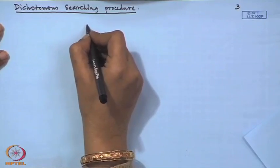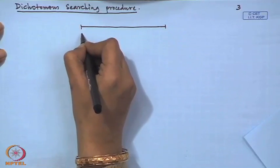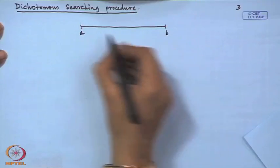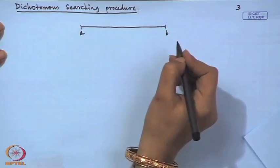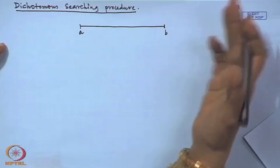In the dichotomous search technique, we take the middle value of the initial interval [A, B], giving L₀/2. We then consider two points on either side of the midpoint — x₁ and x₂ — each at a distance of δ/2 from the midpoint, where δ is a very small positive value. A key advantage is that the technique applies to both continuous and discontinuous functions, requiring only functional value evaluations rather than differentiation.